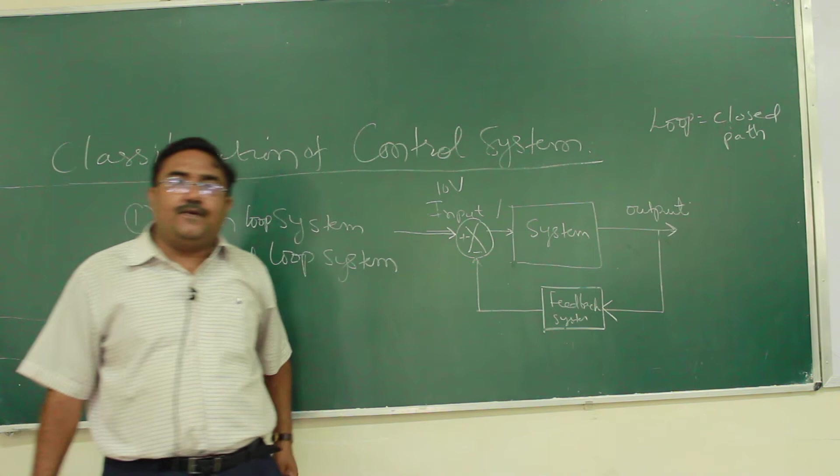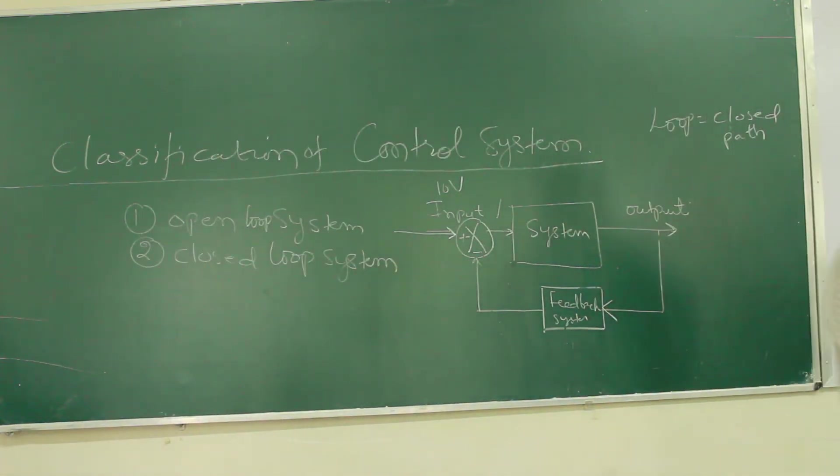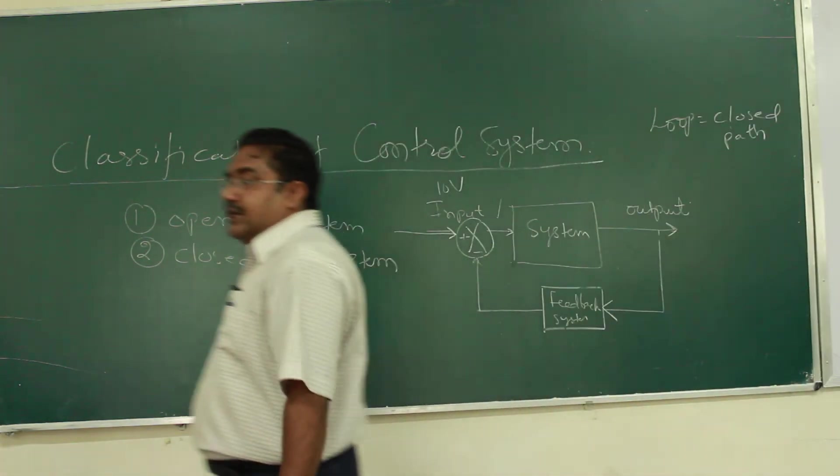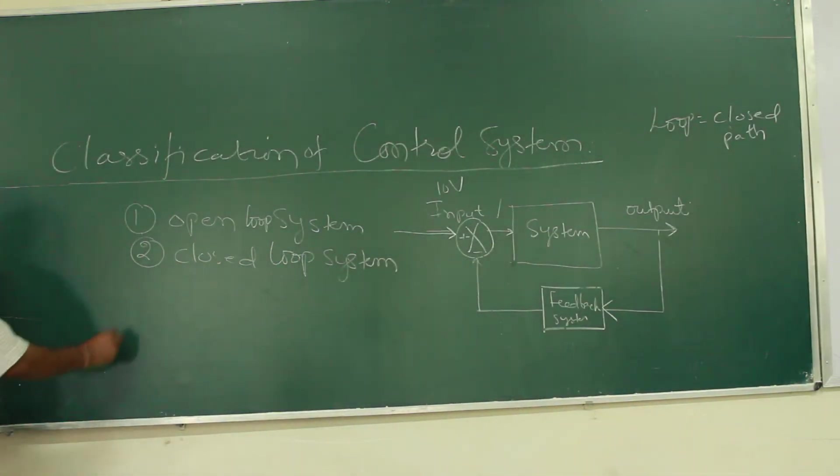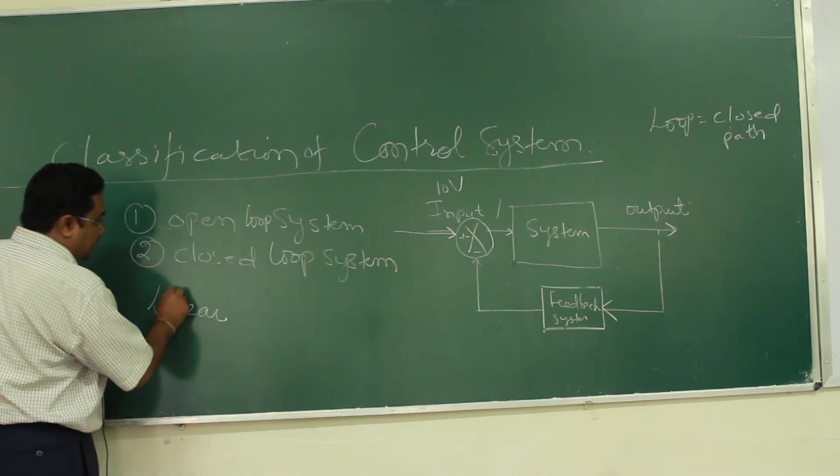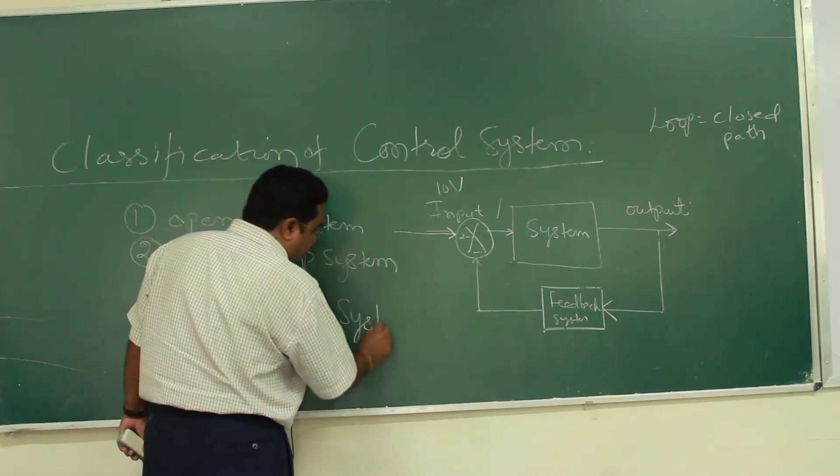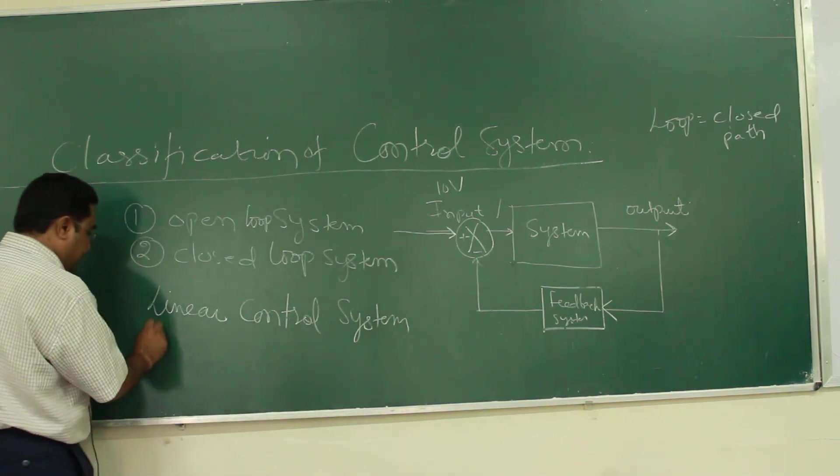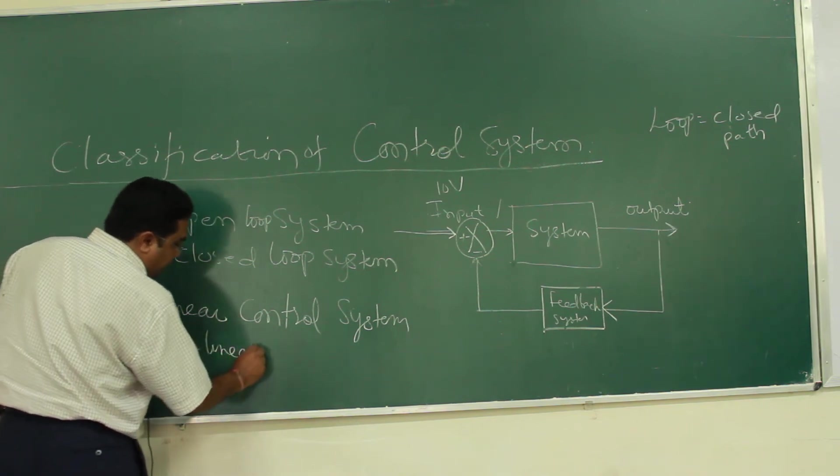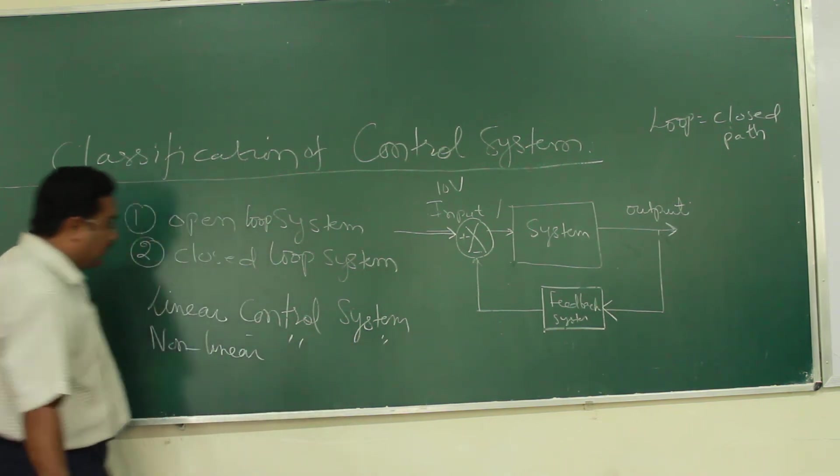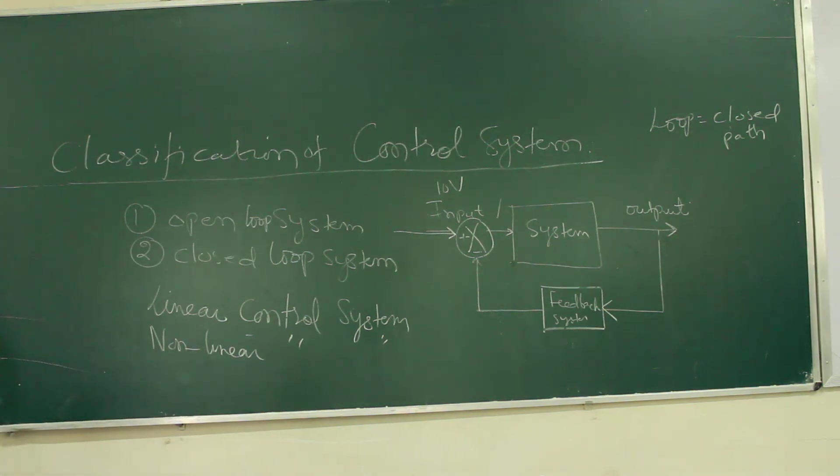Some books you will find another classification like linear and non-linear system. Linear control system and non-linear control system. We have elaborately discussed this linearity and non-linearity principle in circuitry also. Can you define what is linear control system and what is non-linear control system? If you know the definition of linear control system, the definition of non-linear is obvious.